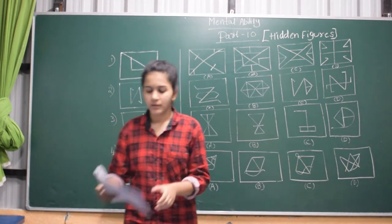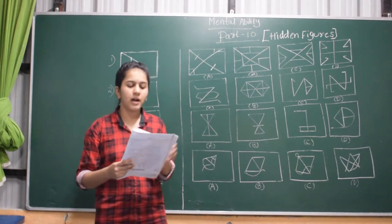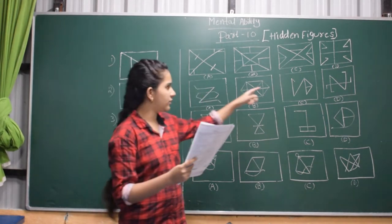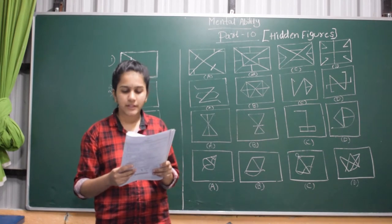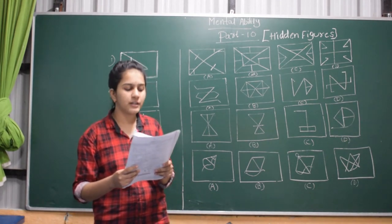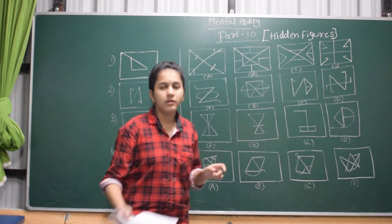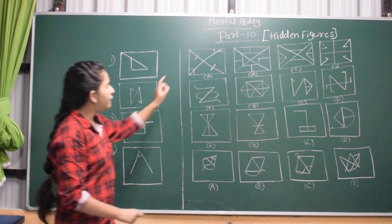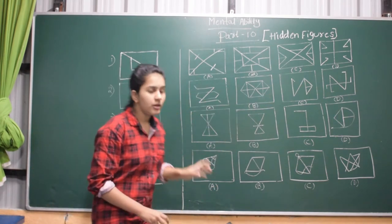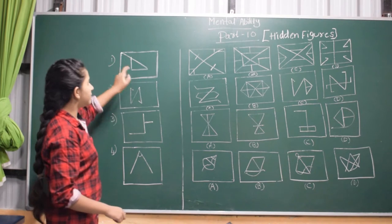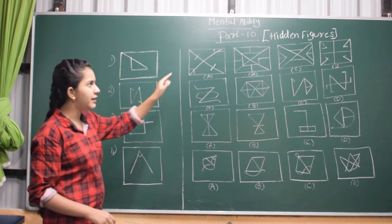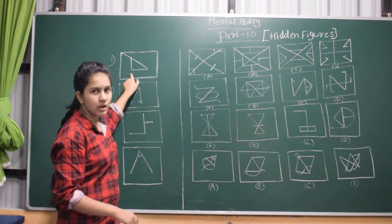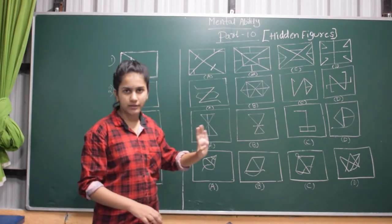So I will read the question. In these figures, a question figure is given on the left side and four answer figures are given on the right side. Select the answer figure in which the question figure is hidden or embedded. That means the question figure is on the left and we find which answer option contains it hidden inside.